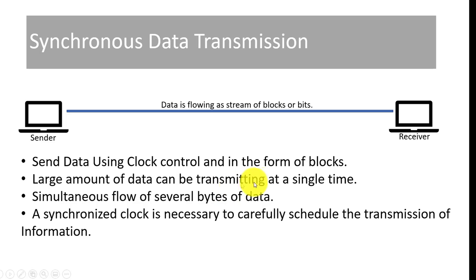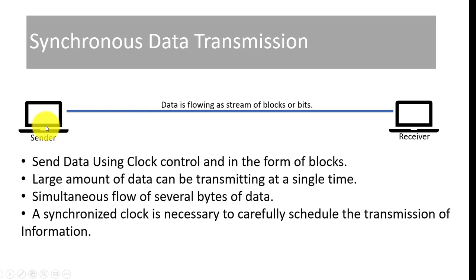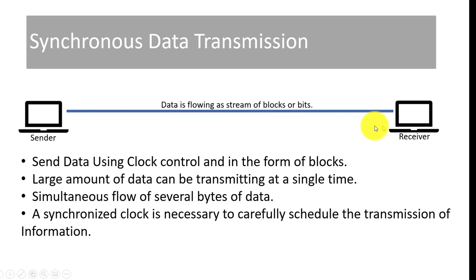A large amount of data can be transmitted at a single time — meaning a lot of data can be sent at once. There is a simultaneous flow of several bytes of data, meaning it is not the case that one byte must reach the receiver before the next byte is sent. Rather, continuous bytes are loaded onto the transmission media and received at the receiver end.